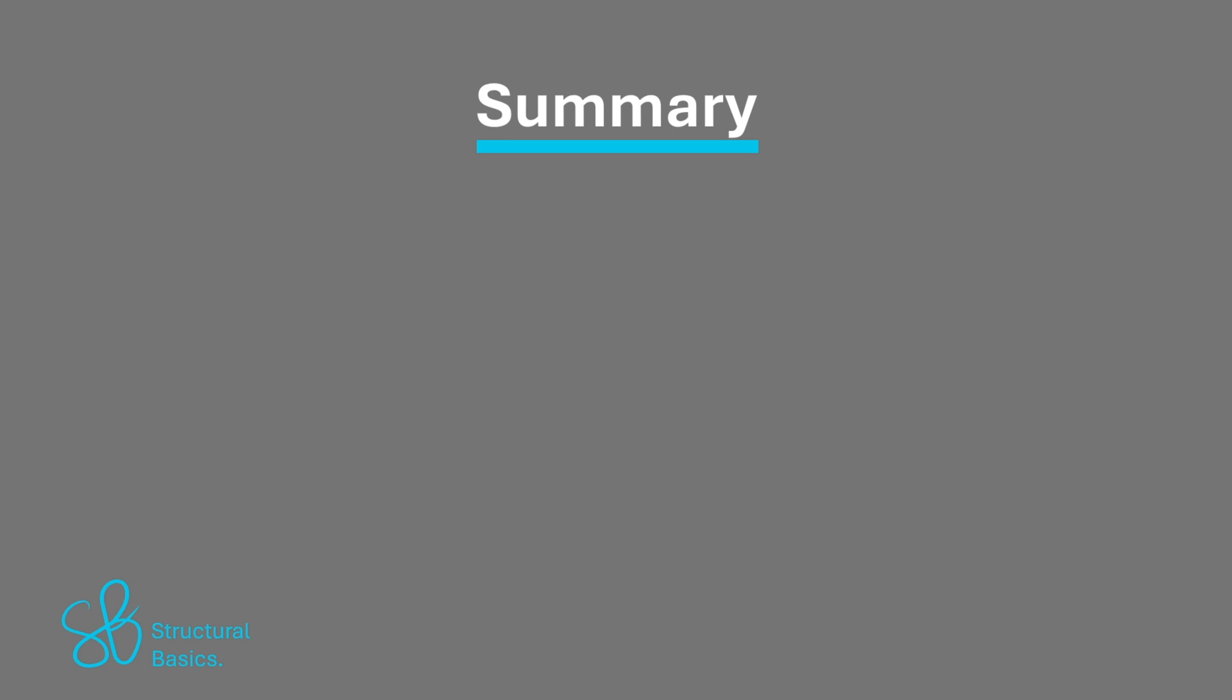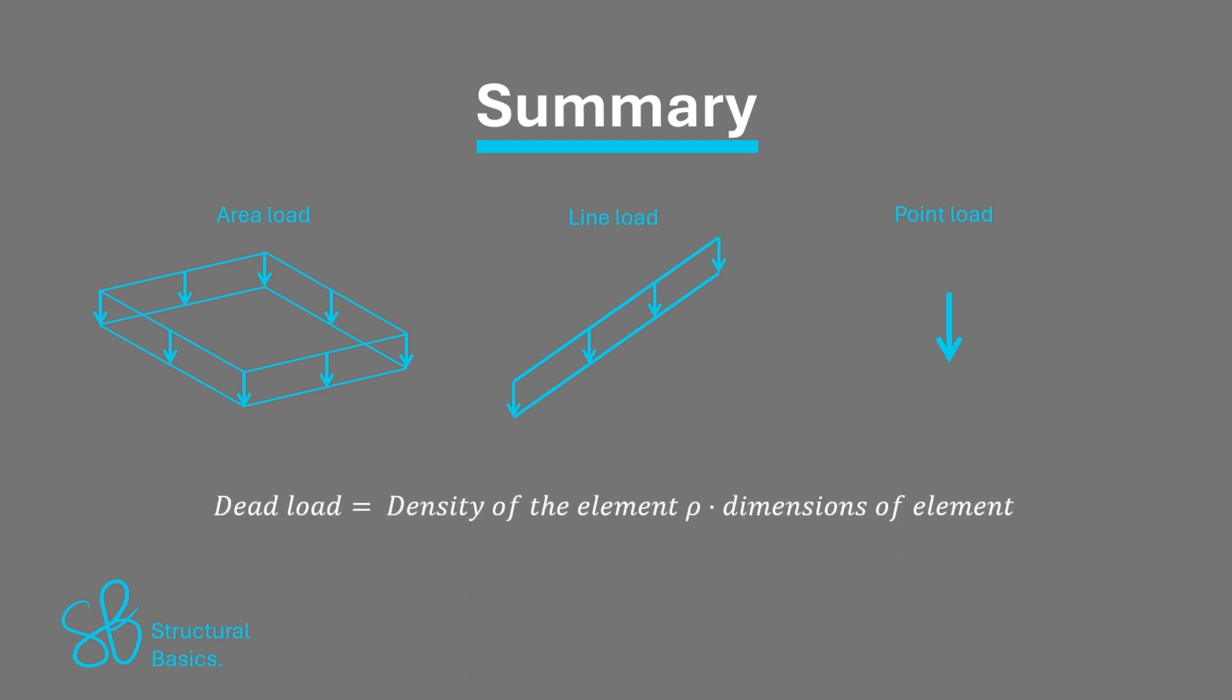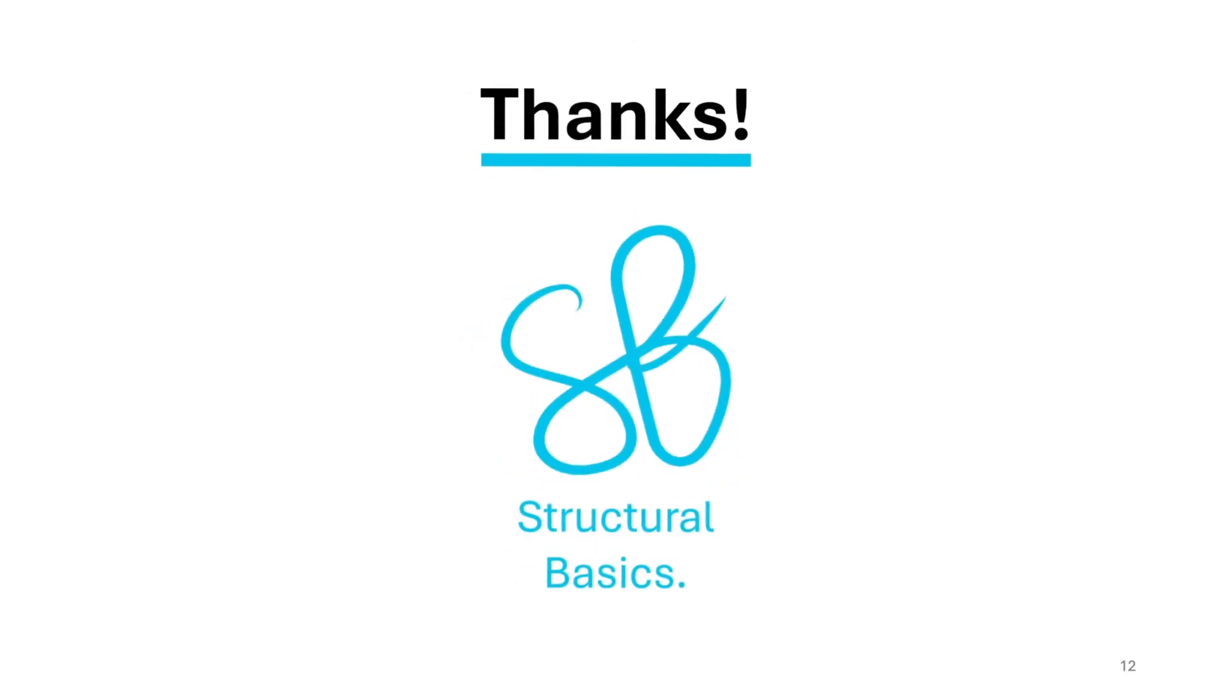So to summarize, the dead load can be used in three different variants: area, line, and point load. And it's calculated by density times dimensions of the element, depending on which load type we calculate. Thanks for watching and I'll see you in the next one.